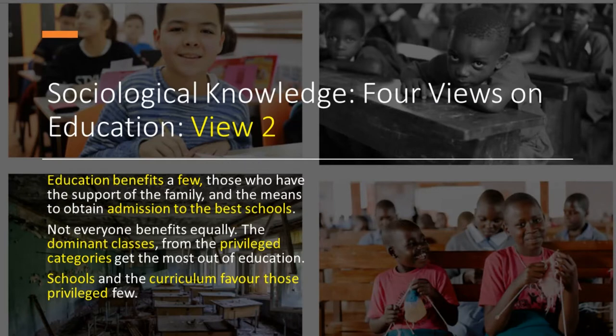Let's now look at another set of opinions on the same context of education. Some people argue that education benefits a few — those who have the support of family and the means to obtain admission to the best schools. Therefore not everyone benefits equally. The dominant classes, that is those who come from privileged categories, get the most out of education, and therefore the school and the curriculum favour those privileged few in society. This is a very different way of looking at how the same institution — education — functions.